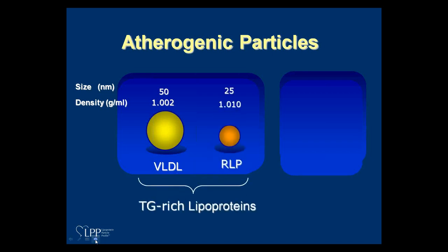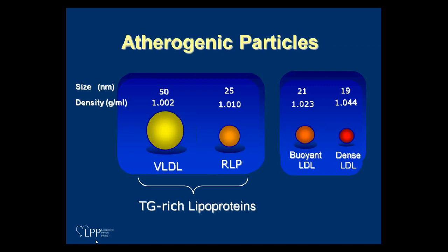Remnant lipoproteins are smaller than the larger VLDL particles, about half the size, and also contain triglycerides. We have large LDLs that are not considered part of the remnant group and small LDL particles. What's interesting is that the atherogenic particles — all RLP, large LDL, small LDL — range in size from 25 nanometers down to 19, and this mean size is about the average pore size of the endothelial lining. Particles smaller than a certain middle size can penetrate the pores more rapidly than larger particles.